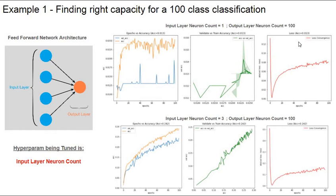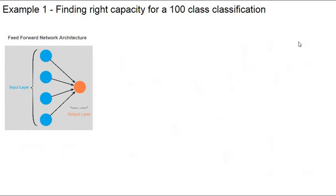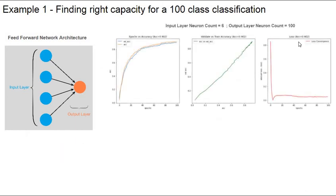We're going to increase the number of input neurons again, this time to a count of six. When we change it to six, the epochs versus accuracy chart shows an overall accuracy of 90% — we have really learned a lot about the classification problem. Our convergence chart has become much smoother, and our loss values are showing significantly good convergence properties.